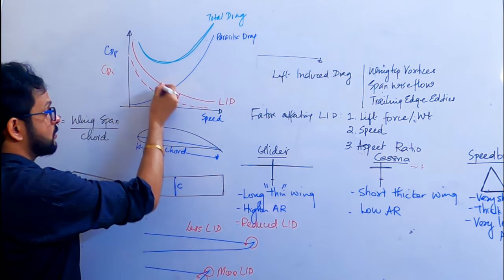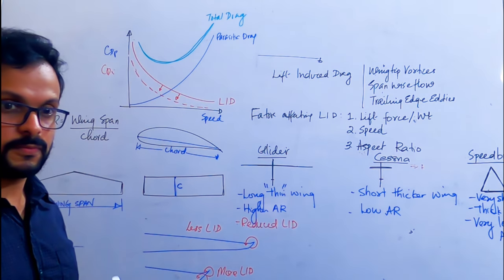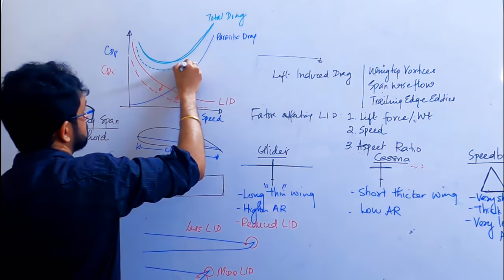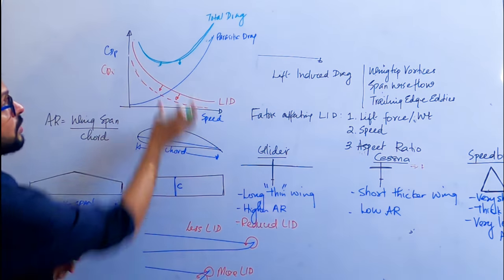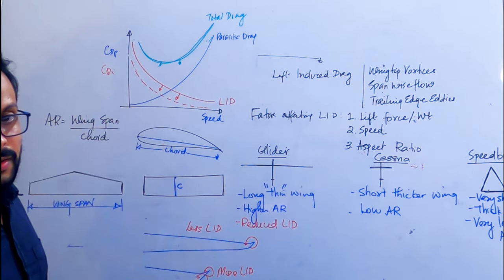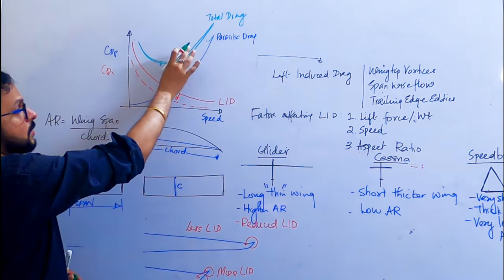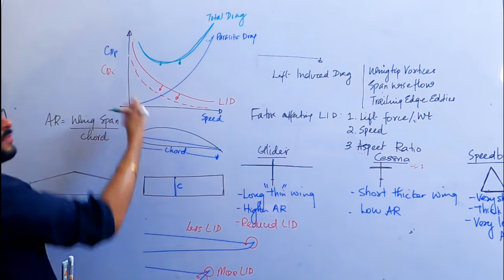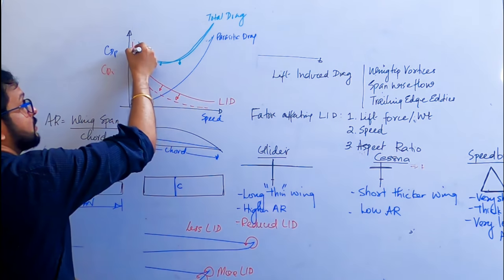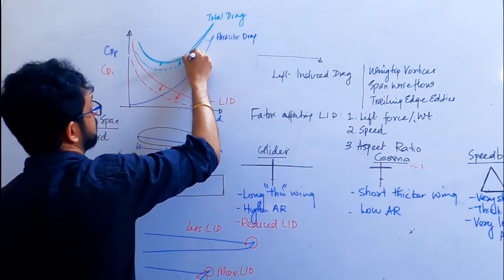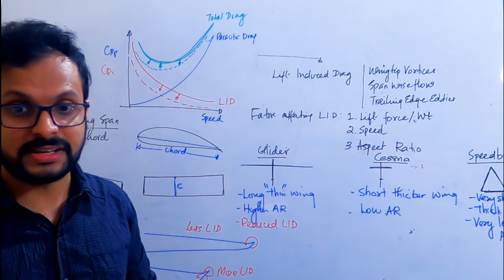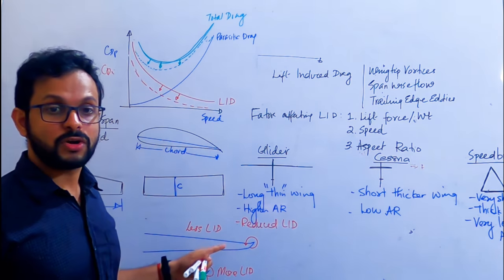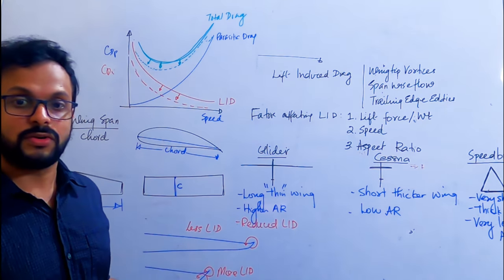You can see the lift-induced drag is reducing. What is the effect on total drag? The total drag reduces, and the total drag curve shifts to the left. The lift-induced drag has shifted to the left, and therefore the net total drag curve also shifts towards the left.